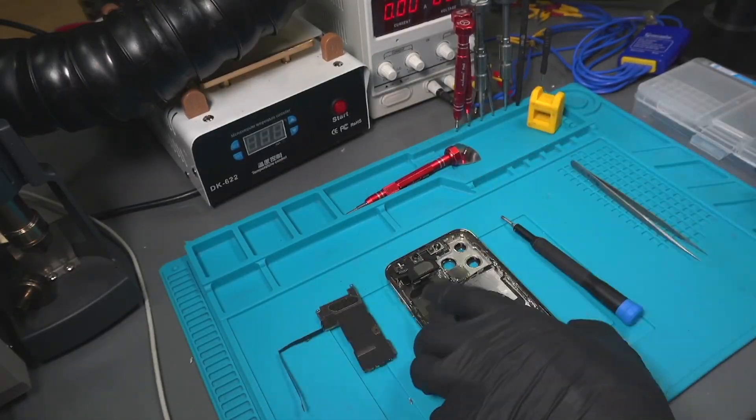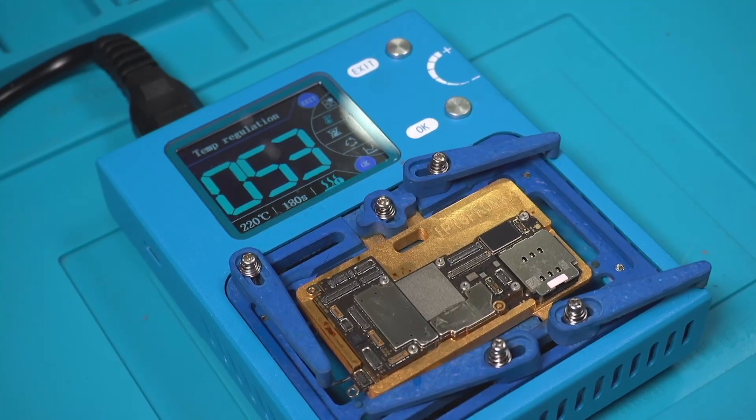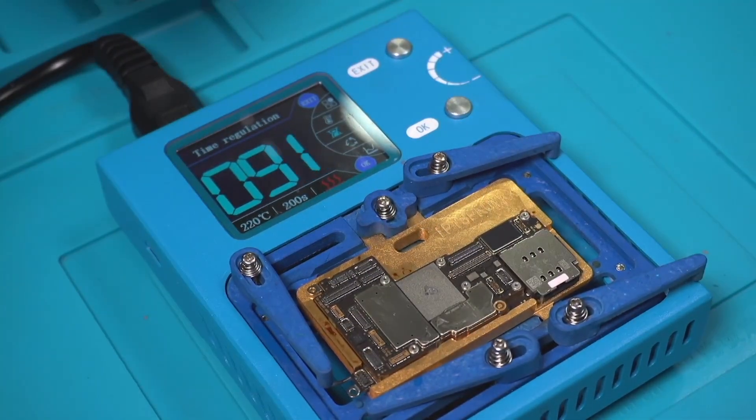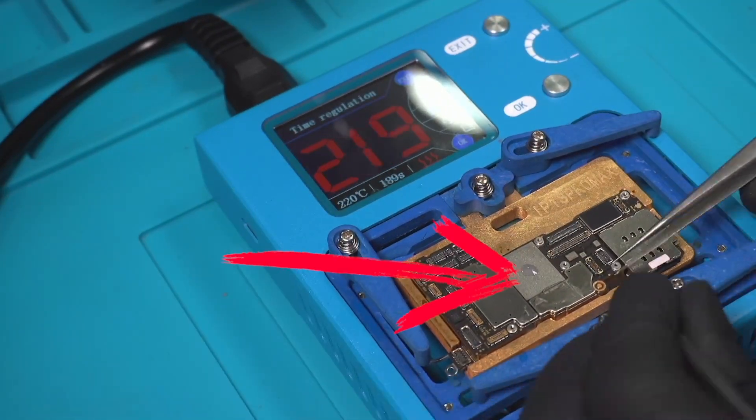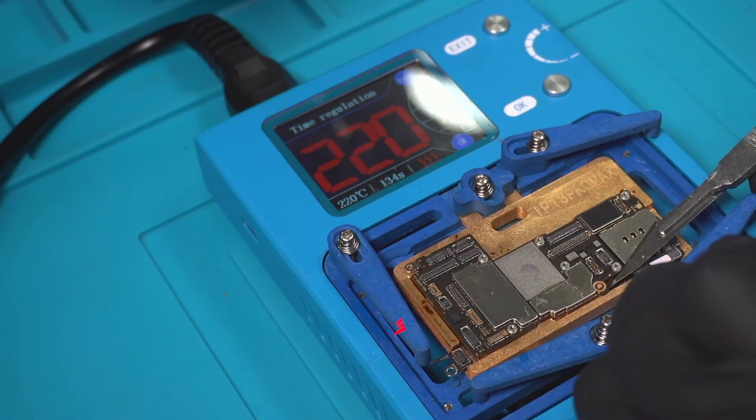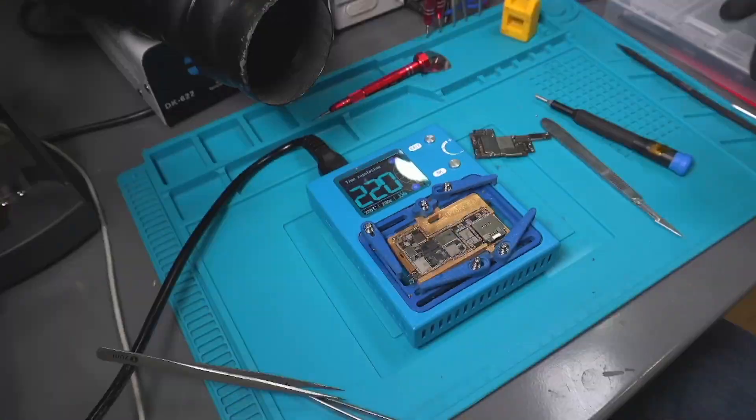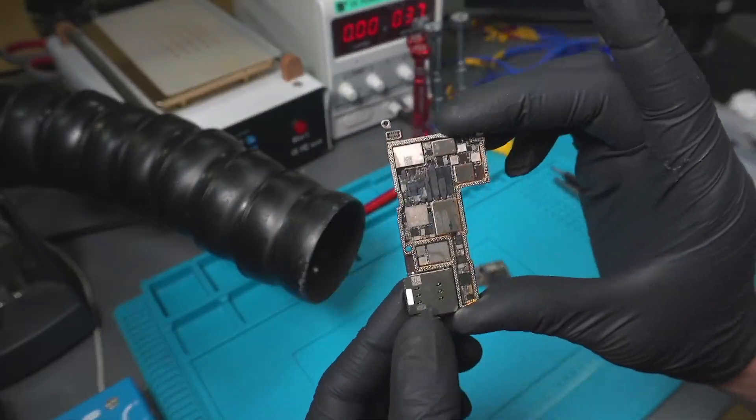We remove the motherboard from the housing and place it in the preheater at 220 degrees Celsius. Then we apply solder paste to the motherboard. When the solder melts, it means that the board has reached the necessary temperature for separation.